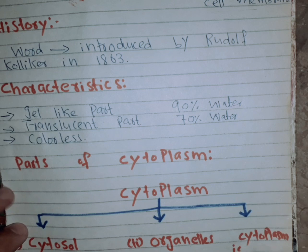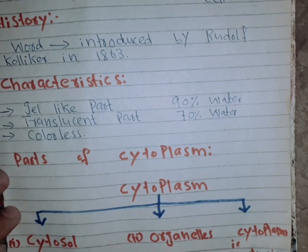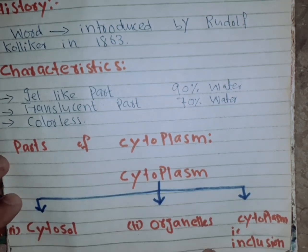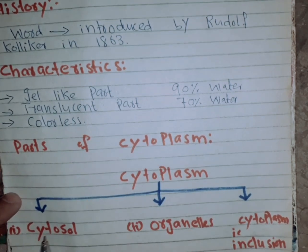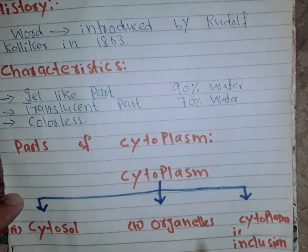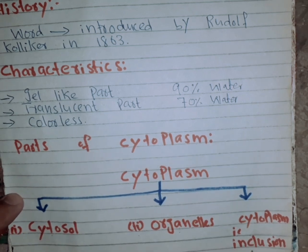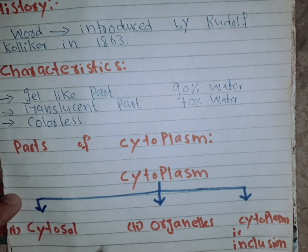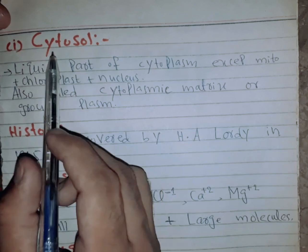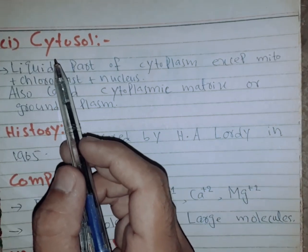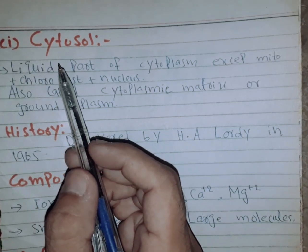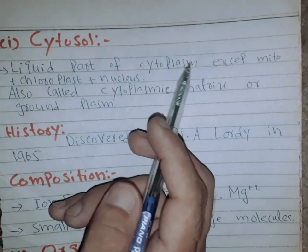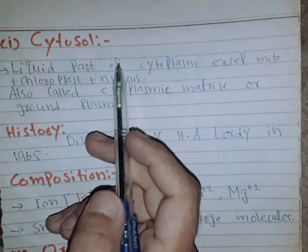The parts of cytoplasm: cytoplasm has three parts — cytosol, organelles, and cytoplasmic inclusions. We will discuss each one by one. Cytosol is the first part of cytoplasm — it is the liquid part of cytoplasm.